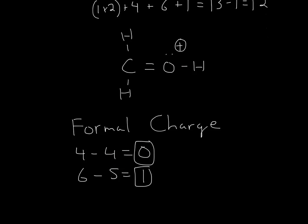Now for oxygen, it's in group 6, so you have 6. Then you count up the bonds: 1, 2, 3. And you count each electron if you have a lone pair: 4, 5. So 6 minus 5 equals 1. That will be the formal charge on oxygen.